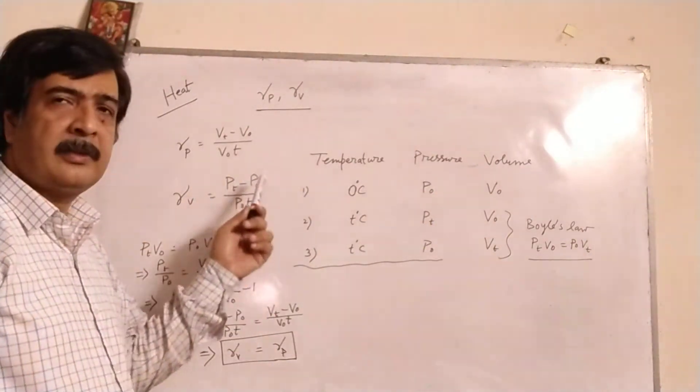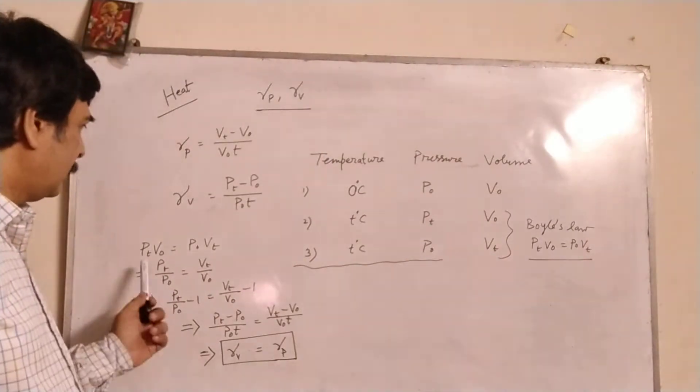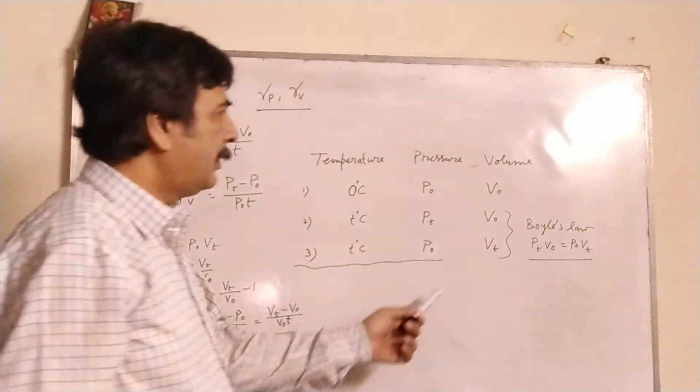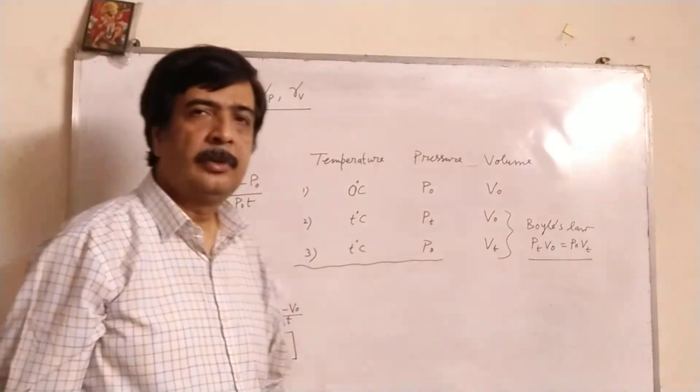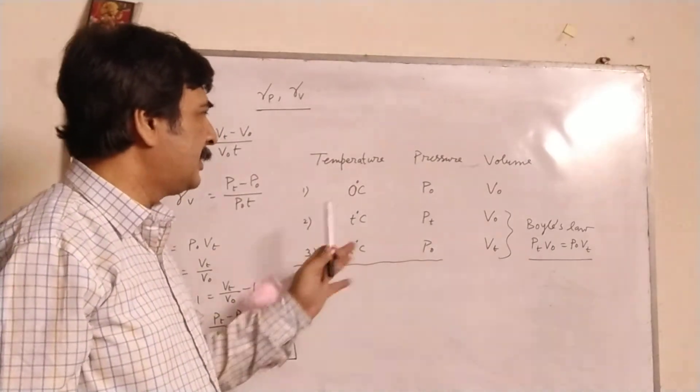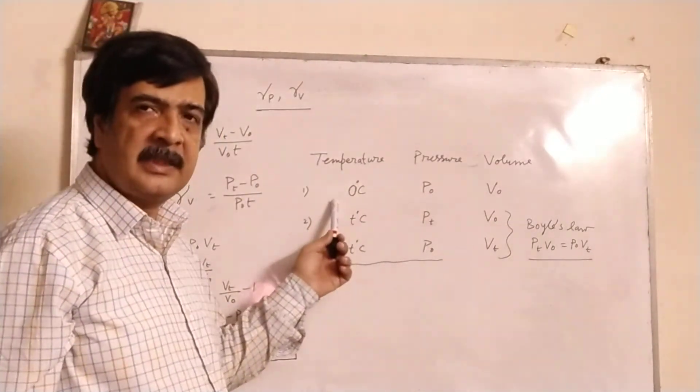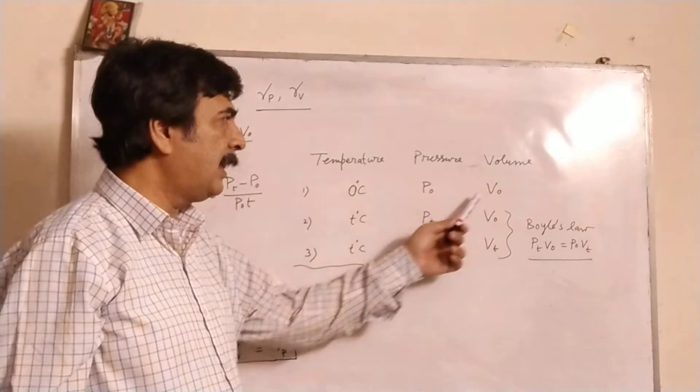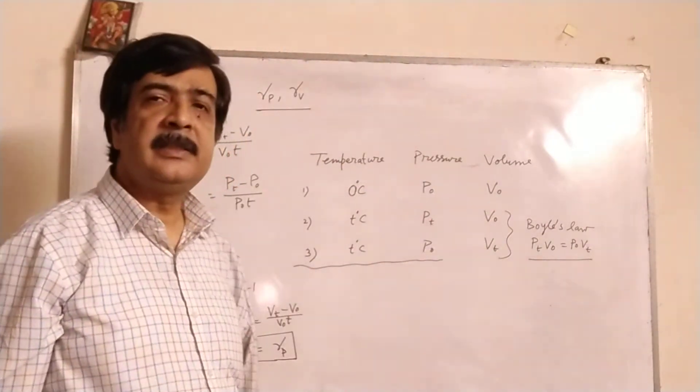Now I have drawn a chart to understand the situation. At zero degrees Celsius, let the pressure be P_0 and volume be V_0. This is the initial condition.